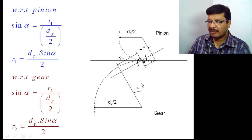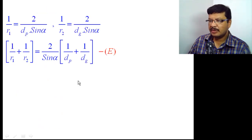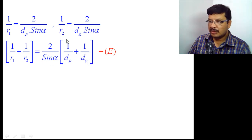With respect to the gear, sin(alpha) = r2 / (dg/2), so r2 = dg·sin(alpha)/2. Next, our aim is to find 1/r1 + 1/r2. Adding these two gives 2/sin(alpha) × (1/dp + 1/dg). This term 1/dp + 1/dg I want to simplify further, so I will introduce a parameter called the ratio factor.